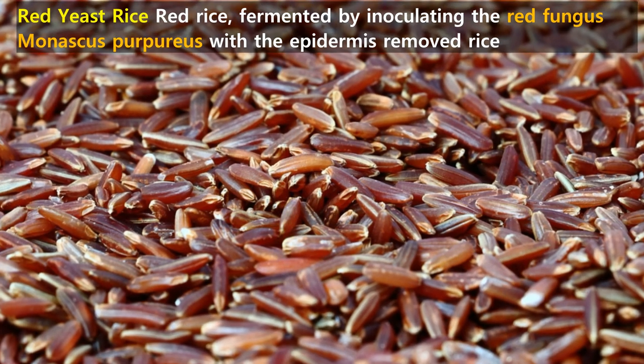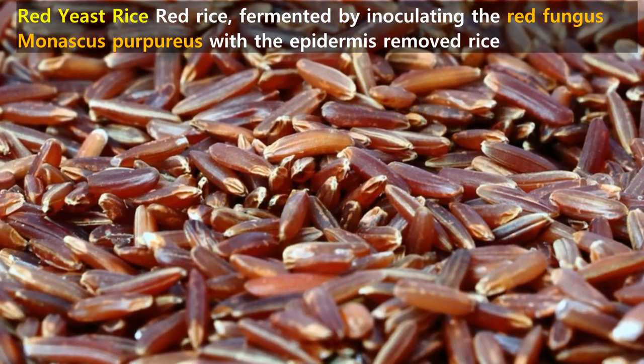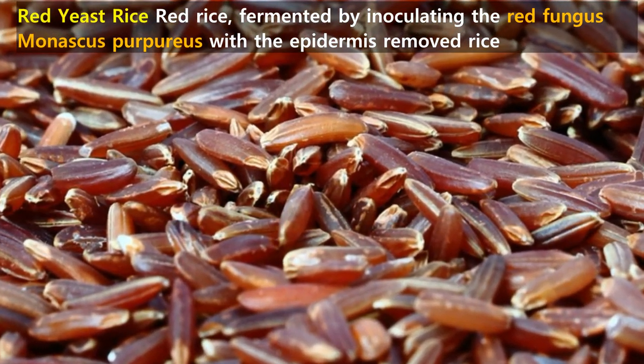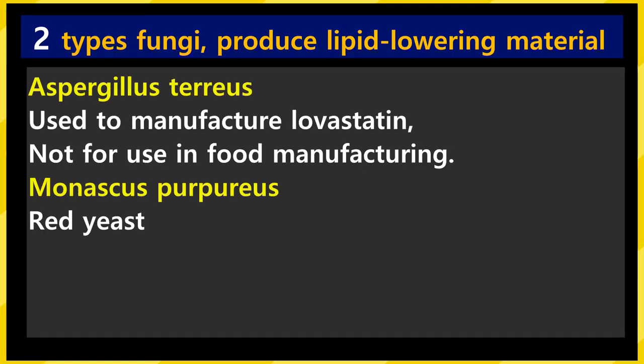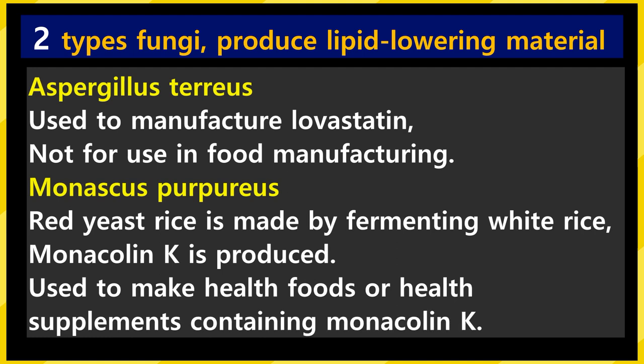What we see now is red rice that has been fermented by inoculating red yeast into white rice with the epidermis removed. There are 2 types of fungi that produce lipid-reducing substances. First, Aspergillus terreus, which is used to manufacture statins, a prescription drug, and is not used in food manufacturing. Second, Monascus purpureus.